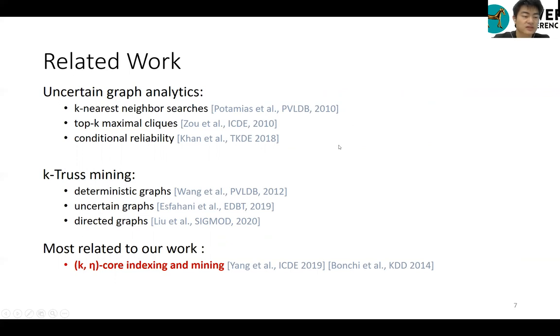The discovery of k-truths has been widely studied over various kinds of graphs, including deterministic graphs, uncertain graphs, and directed graphs. The study most related to our work is k-ethical indexing and mining. The key distinctions with our work are we study a different dense subgraph of k-gamma-truths. We develop different optimization techniques of top-down partition and another approximate indexing algorithm.